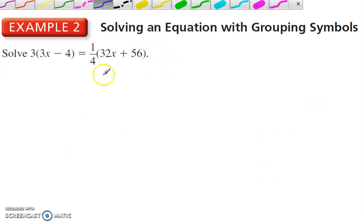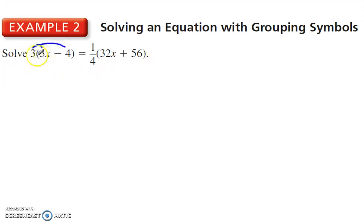Solving an equation with grouping symbols. Distributive property. Multiply by both terms, so 9x minus 3 times 4 is 12, or 3 times negative 4 is negative 12. Multiplying with a fraction is not as hard as you might think. If it's a whole number, just multiply by the top. So you get 32 over 4x and then 1 fourth times 56 is 56 over 4. Now, we simplify this down. 9x minus 12 carries down, and 32 divided by 4 is 8x. 56 divided by 4 is 14.